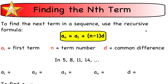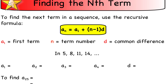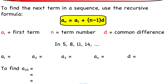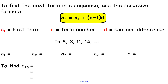One of the things we're going to be doing is finding the terms of a sequence — sometimes called the nth term. There is a recursive formula for this: a sub n equals a sub 1 plus n minus 1 times d. Here, a sub 1 is the first term in the sequence, n is the term number we're looking for, and d is the common difference.